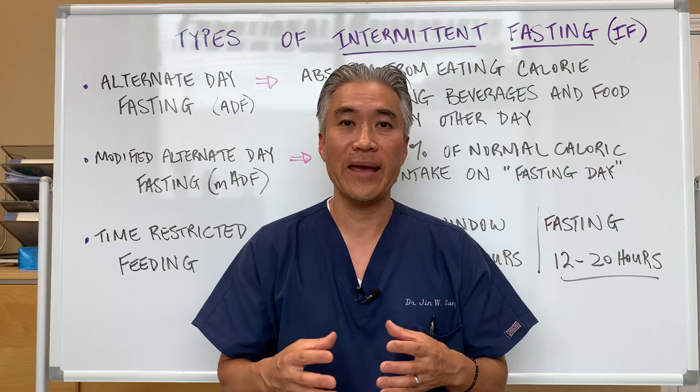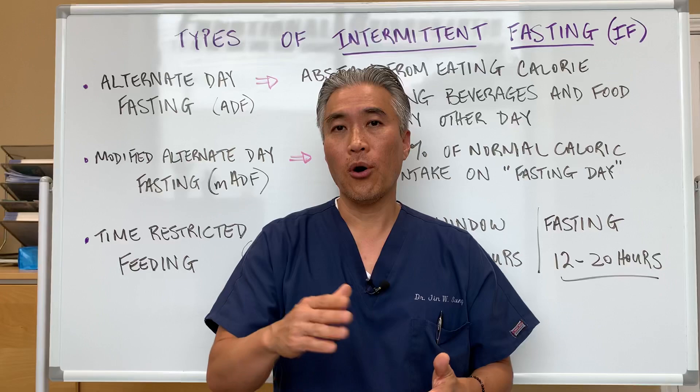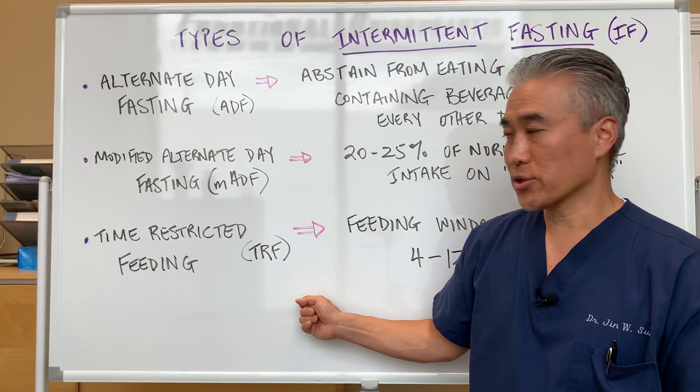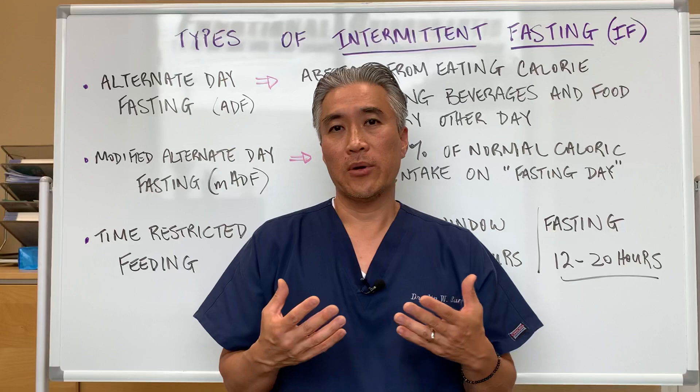What I find most useful for most patients is a feeding window of 8 hours and a fasting window of 16. So let's say you're eating at noon and you can go all the way to 8 o'clock, and then you won't eat anything beyond 8 o'clock until the following day at noon. That's a good way to get patients started with intermittent fasting. I personally use an 8 to 16 window.